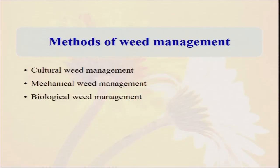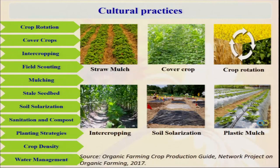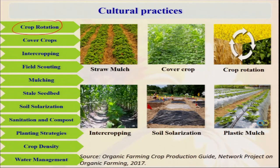What are the different types of methods of weed management in case of organic farming? We cannot use chemicals. The other options are: one, cultural weed management; second, mechanical — with the help of different types of laborers, farm implements, and machineries; and third, biological weed management — how we can control the weeds with the help of biological organisms. Cultural practices include: crop rotation, cover crop, intercropping, scouting, mulching, stale seedbed, soil solarization, planting strategies, and crop density.